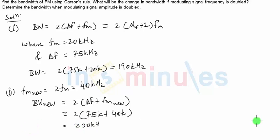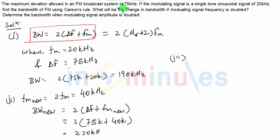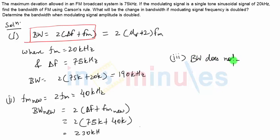The third part asks what will happen to the bandwidth when the signal amplitude is doubled. It can be easily seen from Carson's rule expression that the bandwidth does not depend upon the amplitude of the signal — it depends upon fm, the modulating signal frequency, and Δf, the frequency deviation, which is constant as per the given question. Therefore, we conclude that bandwidth will not change even when the amplitude is doubled.